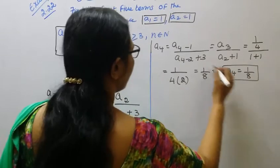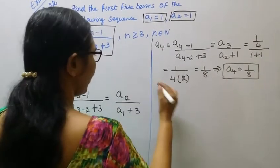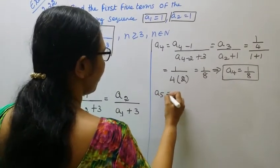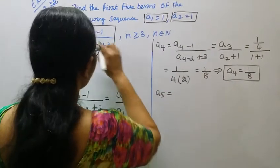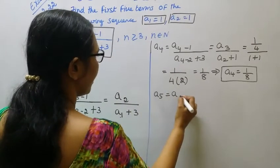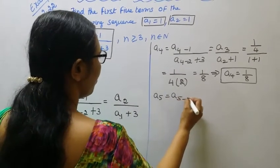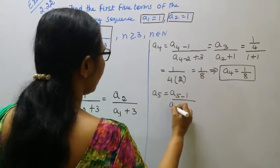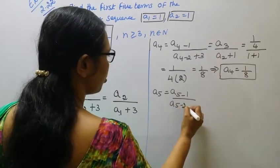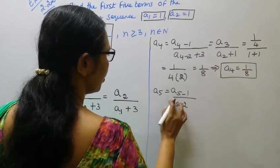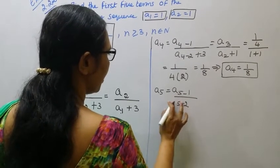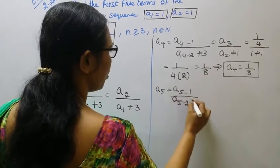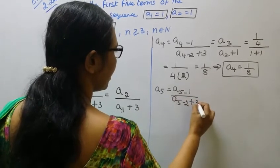For a5: a5 equals a(5-1) divided by a(5-2) plus 3, that is a4 divided by a3 plus 3.